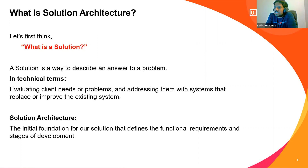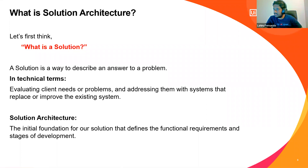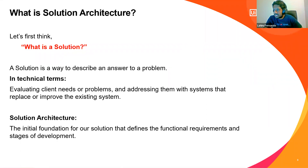When we say 'solution,' we're referring to an answer for a problem we already have. In RPA, what we automate are processes already in place in an organization where people do a lot of manual work. That's what we're trying to improve. To build our automation system, we need to come up with this architecture after doing proper requirement gathering. Solution architecture means evaluating client needs or problems and addressing them with systems that can replace or improve the existing system.